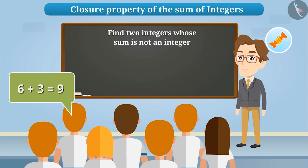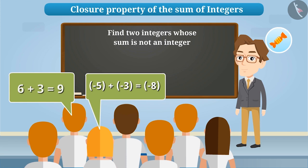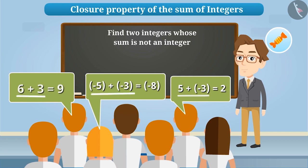Some added two positive integers. Some added two negative integers. Some added one positive integer and one negative integer. But no one obtained integers whose sum is not an integer.